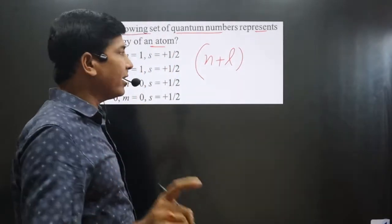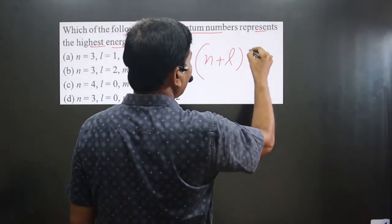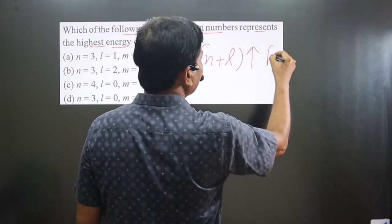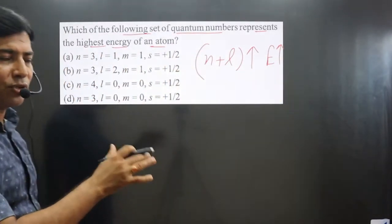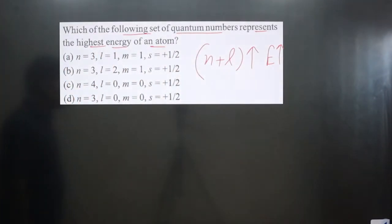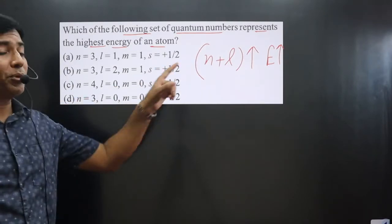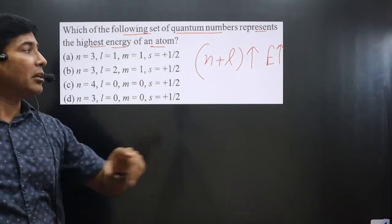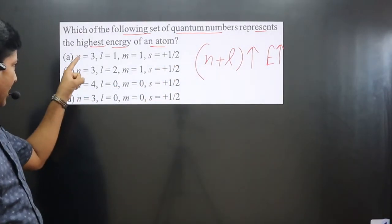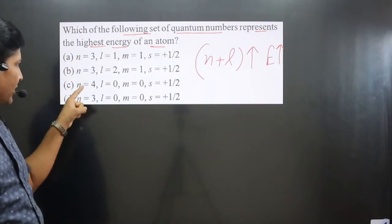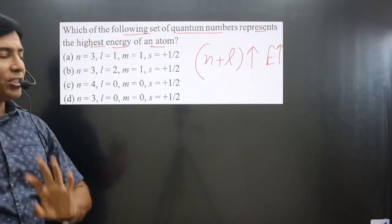Always keep in mind: higher the value of n plus l, higher is the energy. Based on this concept, we are going to answer this question. Here, n is the principal quantum number and l is the azimuthal quantum number. You can see that in each option, both the n and l values are given.